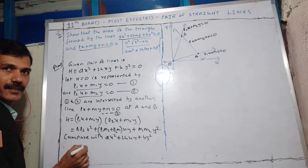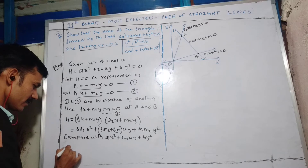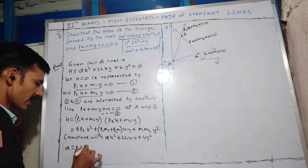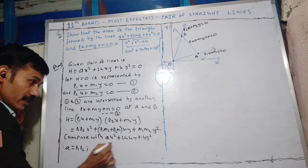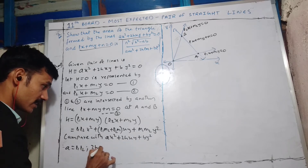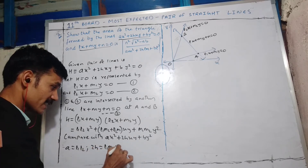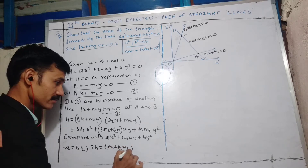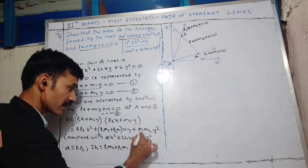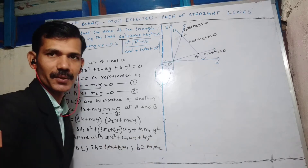Comparing with the given pair of lines: the x² coefficient A equals L1·L2; the xy coefficient 2H equals L1M2 + L2M1; and the y² coefficient B equals M1·M2.